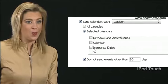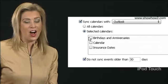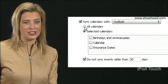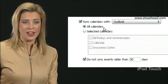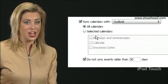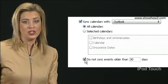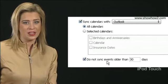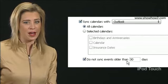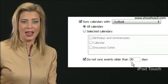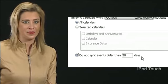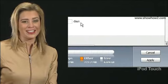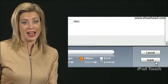In our demo, we click All Calendars. To prevent earlier events from being synced, check the Do Not Sync Events Older Than box and enter the number of days. Finally, click Apply.